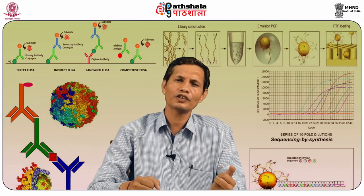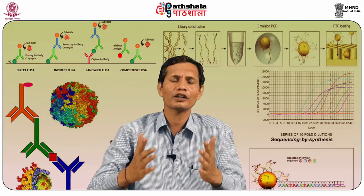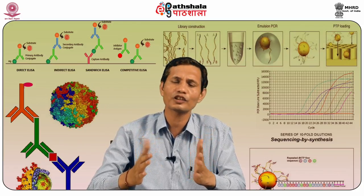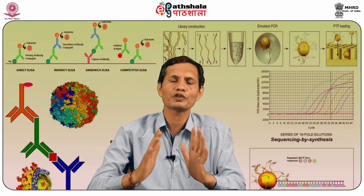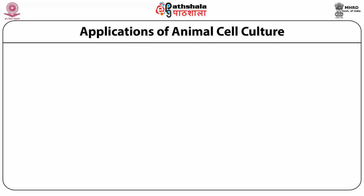Animal cell culture technology is one of the important techniques in life science, utilized for various applications to produce a large number of useful substances for humans and other living organisms. One major application is antibody production through hybridoma technology. With animal cell culture, we can produce various monoclonal antibodies that can be utilized for diagnostic purposes or for treatment of patients.